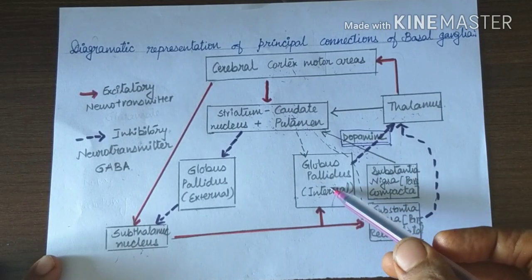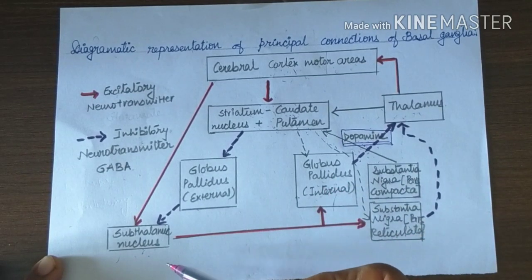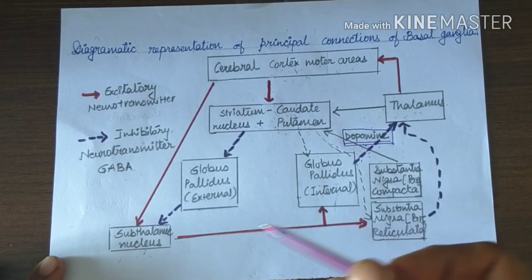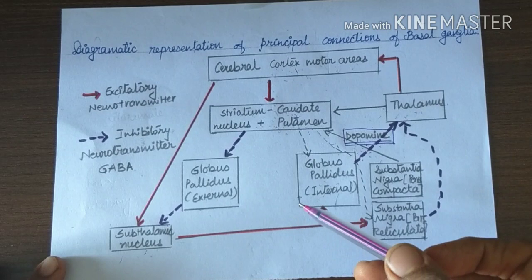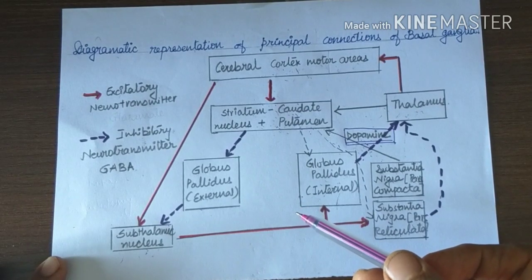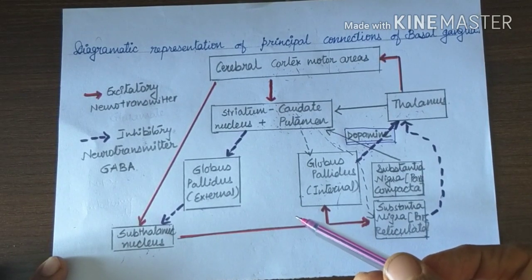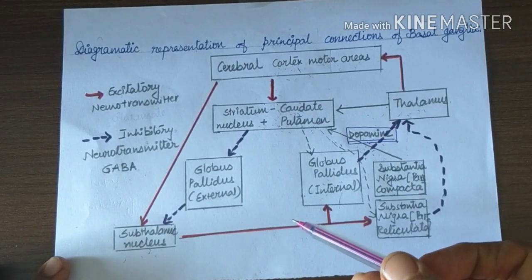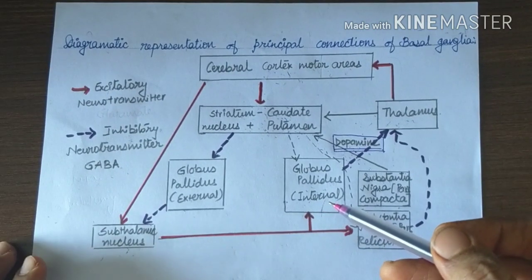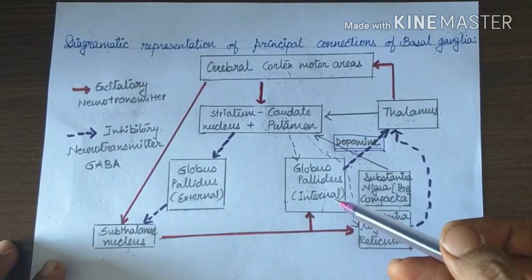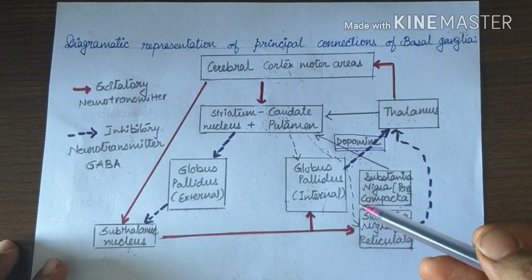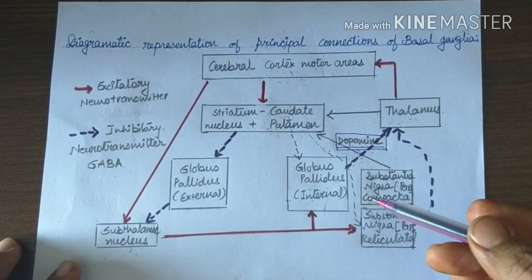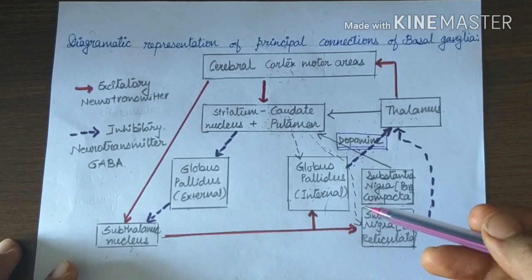Treatment includes pallidotomy in which a lesion is made in the internal segment of the globus pallidus or in the subthalamic nucleus. This helps to restore the output balance towards normal. Along with this pallidotomy, electrodes are implanted and these electrodes are attached to subcutaneous stimulators. High frequency current is administered. This high frequency current disturbs the circuit temporarily.